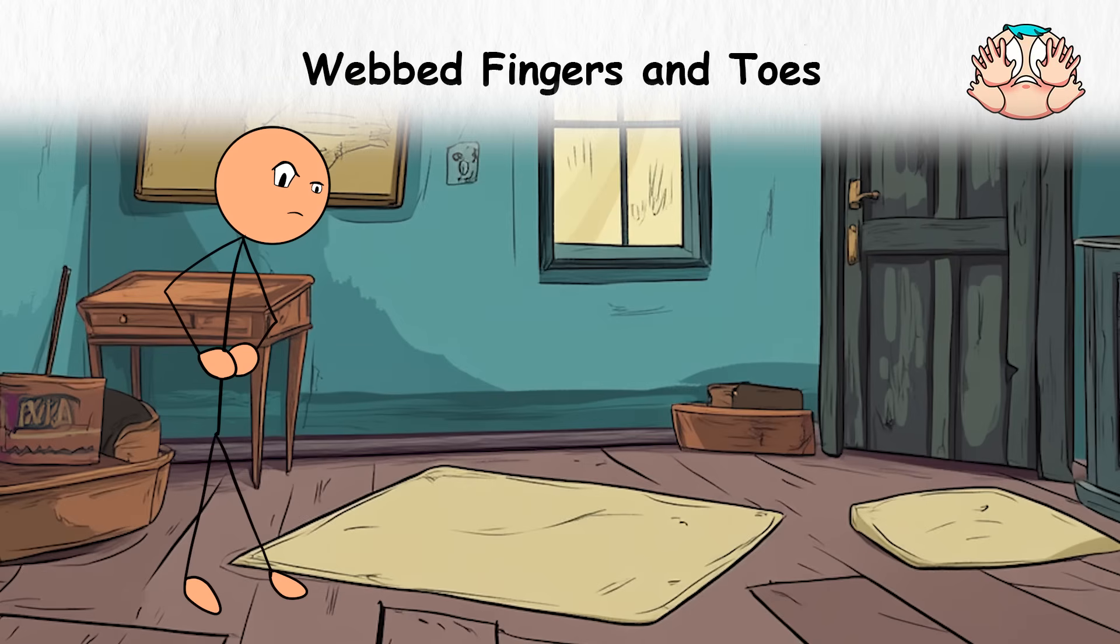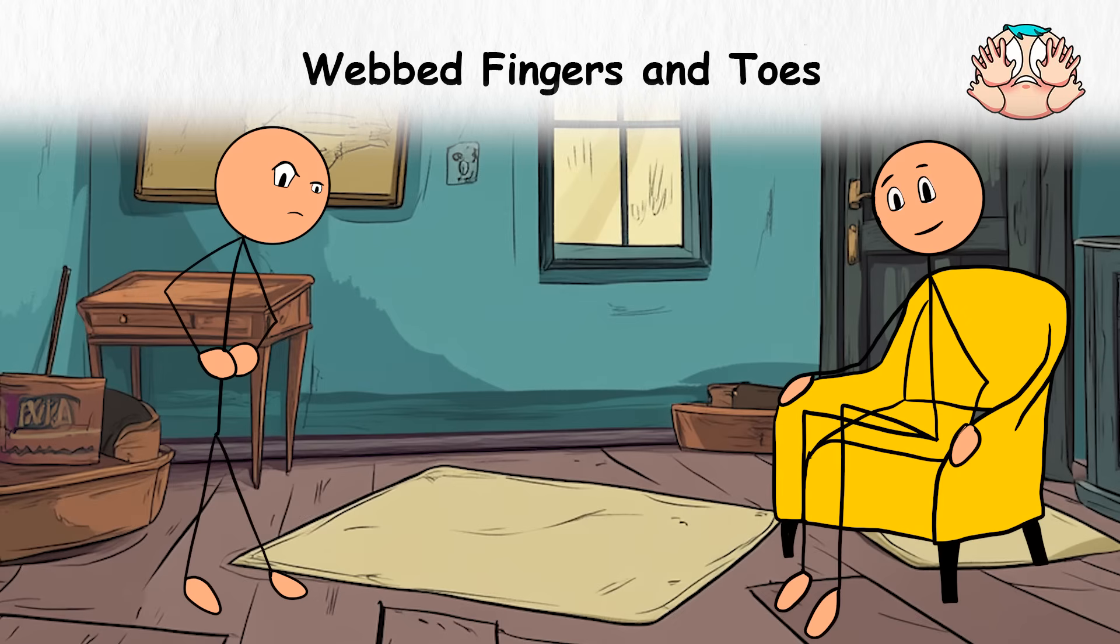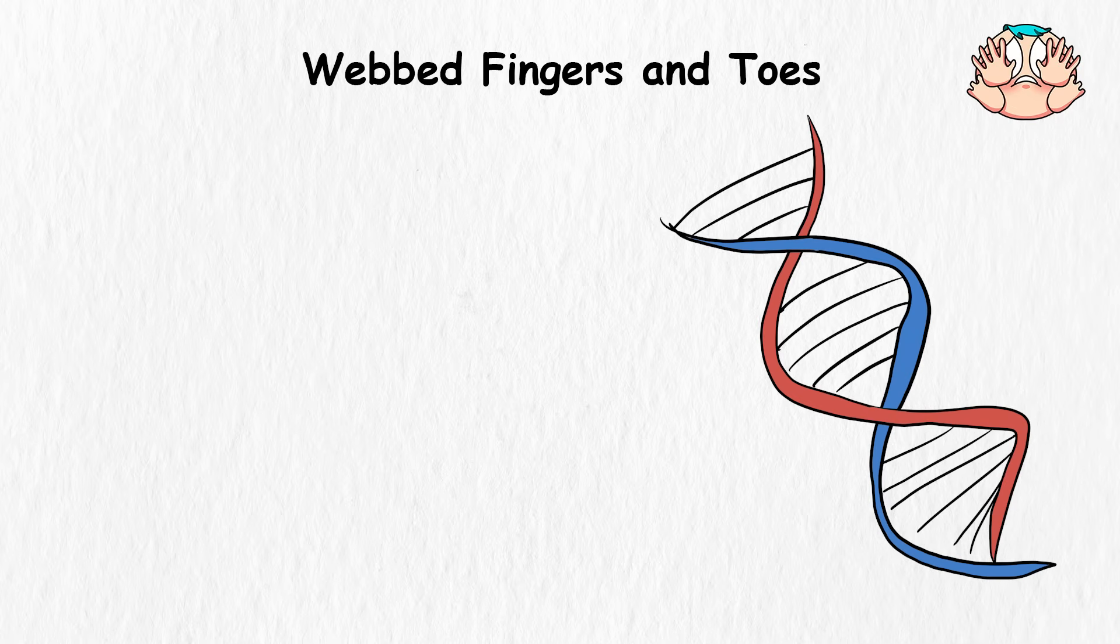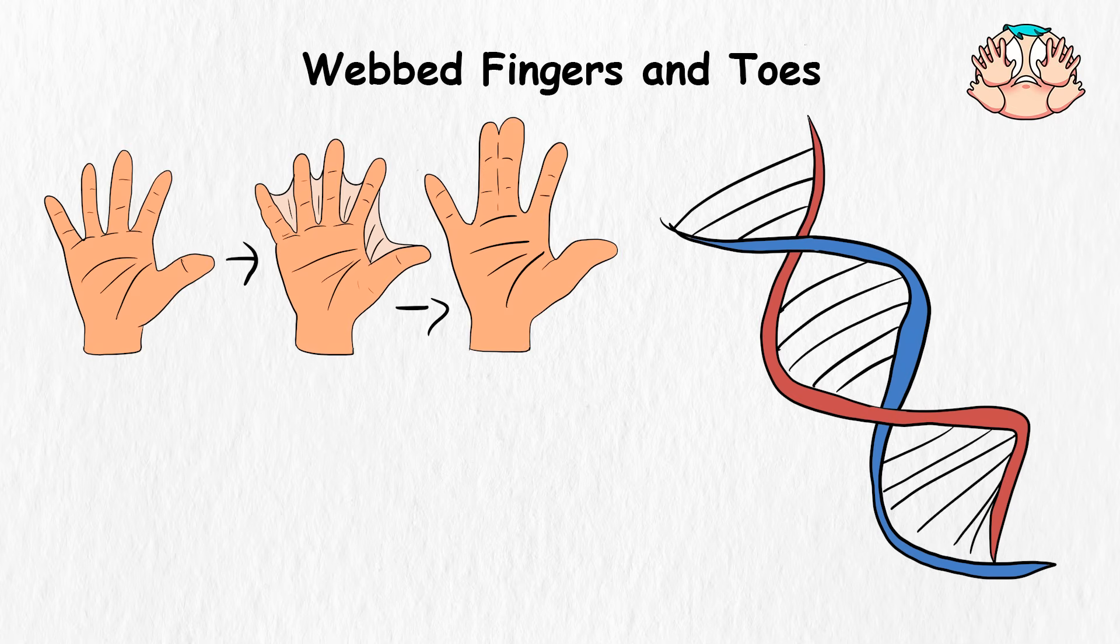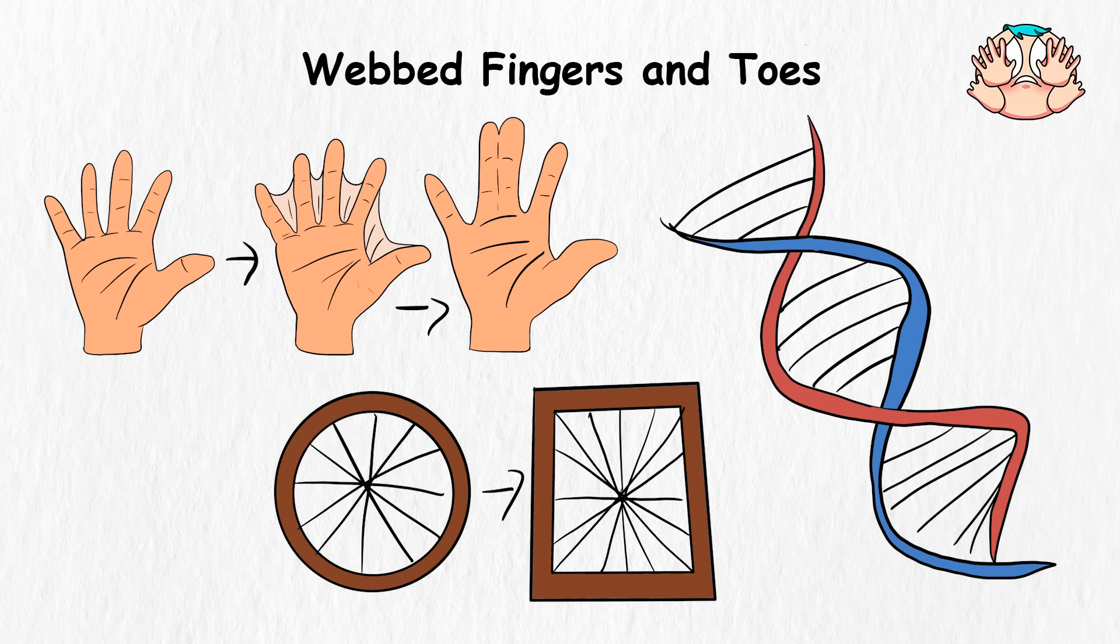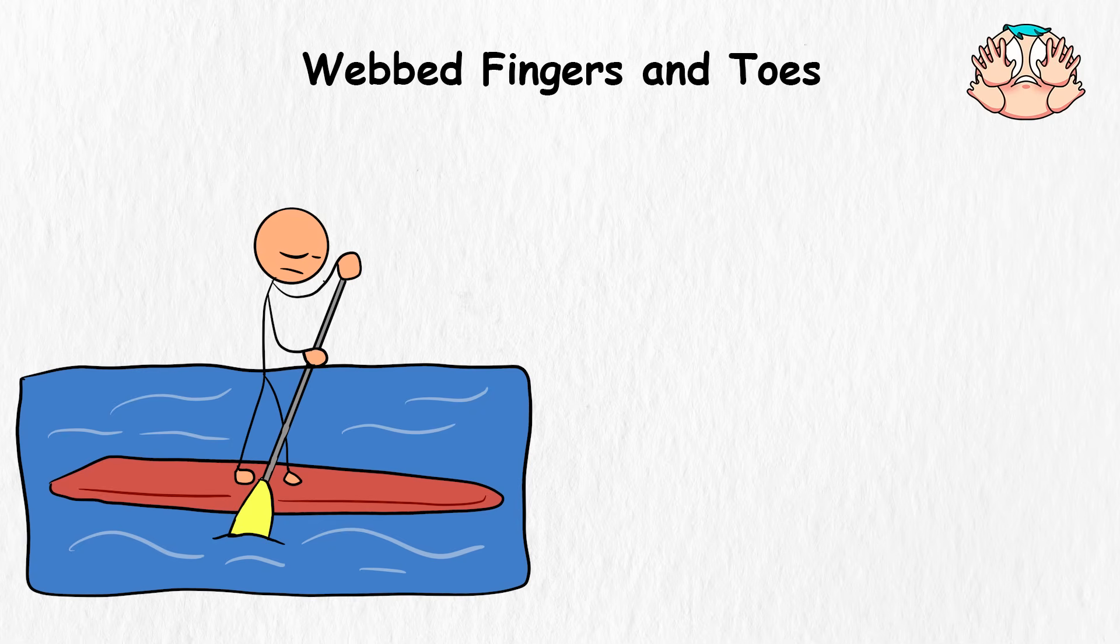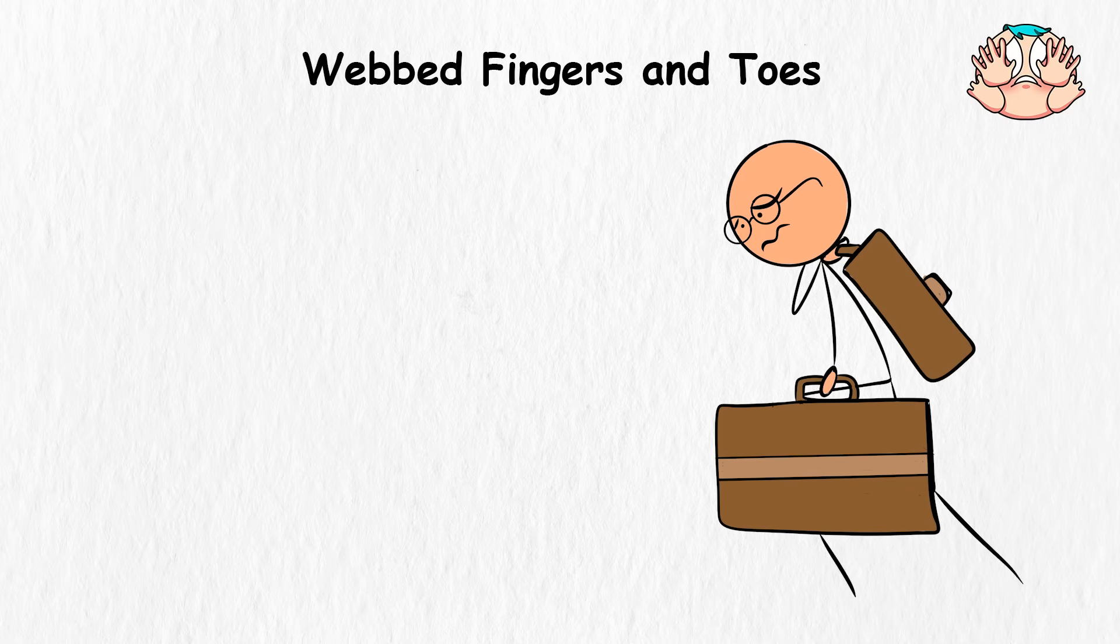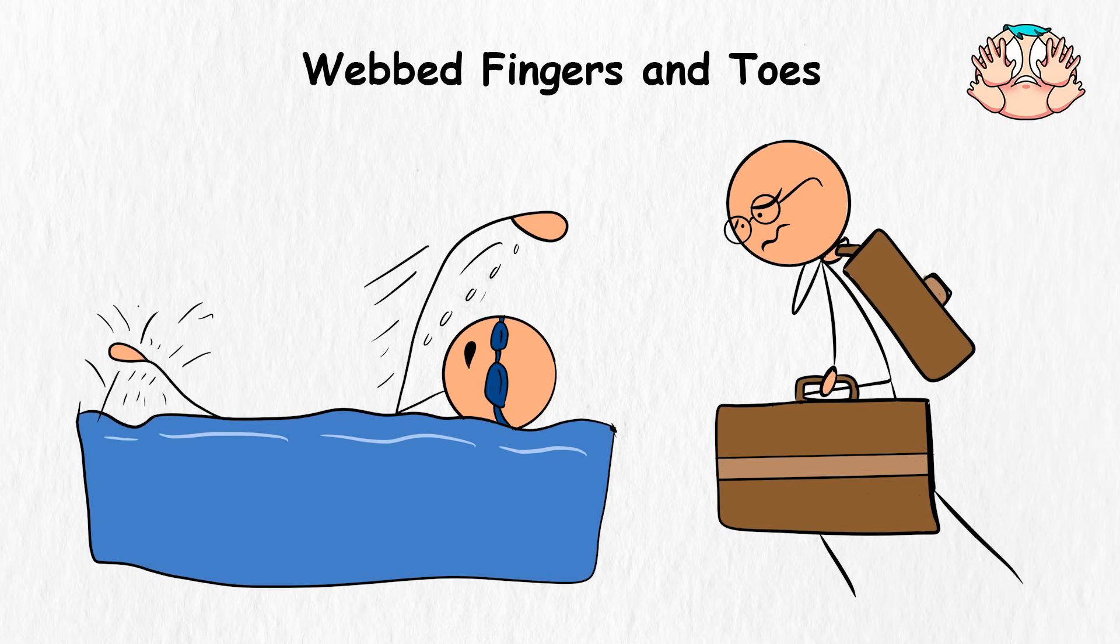But it would actually interest you to know that a small percentage of humans already have webbed fingers or toes due to a condition called syndactyly. It's a genetic trait, so evolution wouldn't even have to reinvent the wheel, just make it a bit more common. Especially if the future generations start adapting to water-heavy lifestyles like underwater cities or jobs that require constant swimming, natural selection might just kick in.